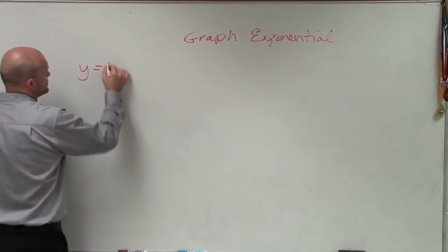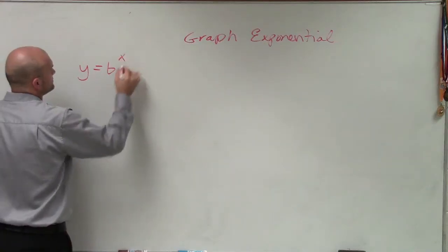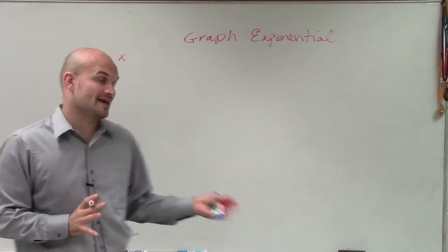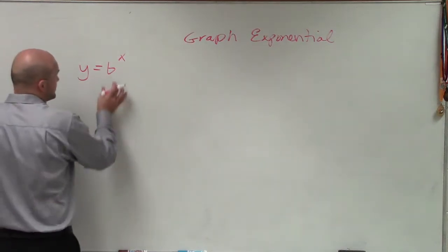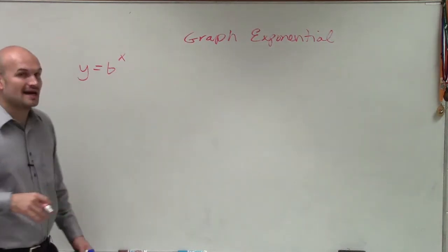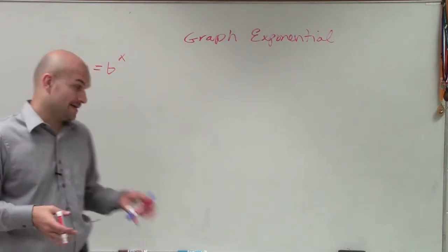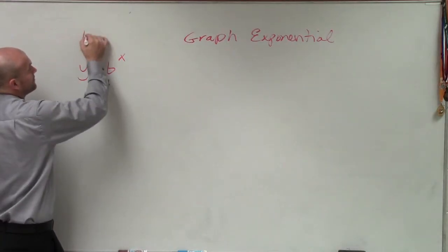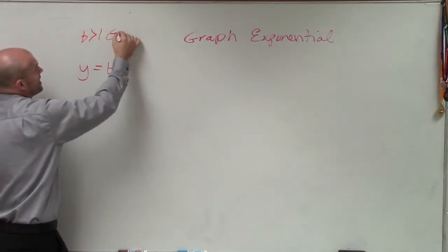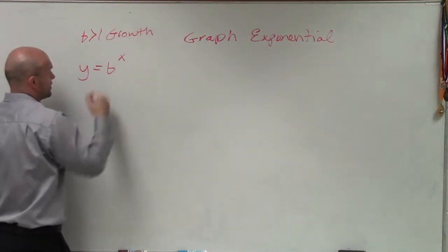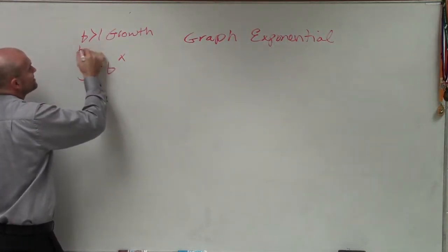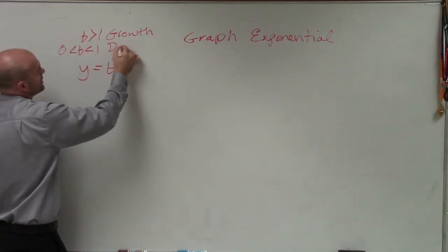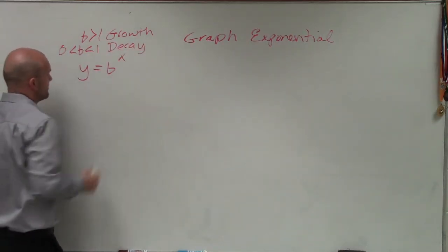The basic form of an exponential graph involves either growth or decay, and which one it is depends on the value of b. If b is greater than 1, the graph is going to be a growth graph. If b is less than 1 but greater than 0, we're going to have what we call a decay graph.